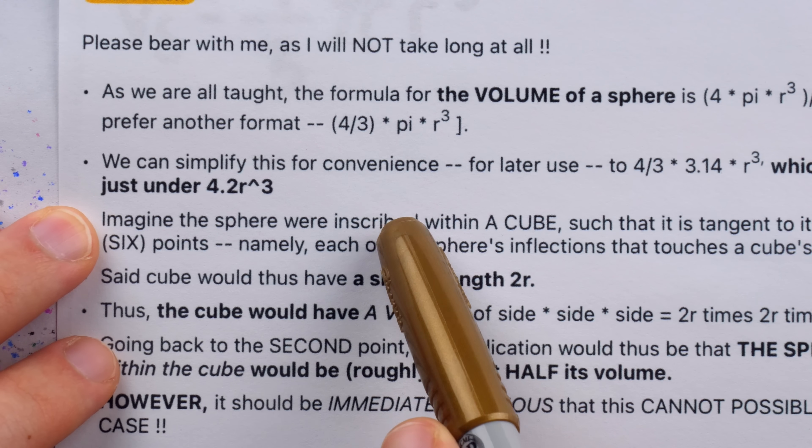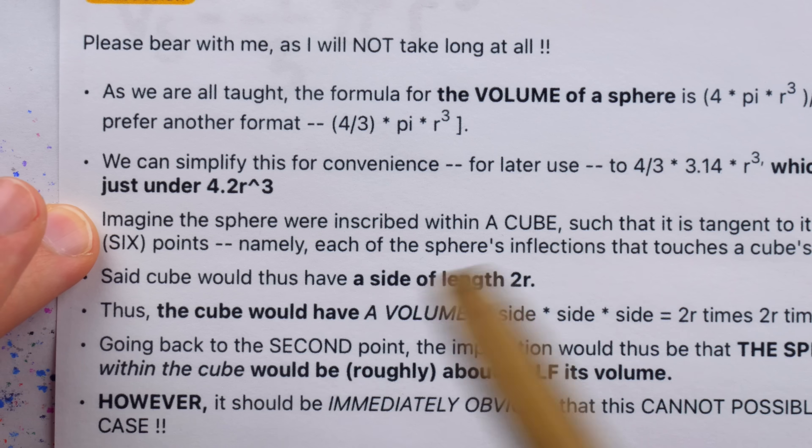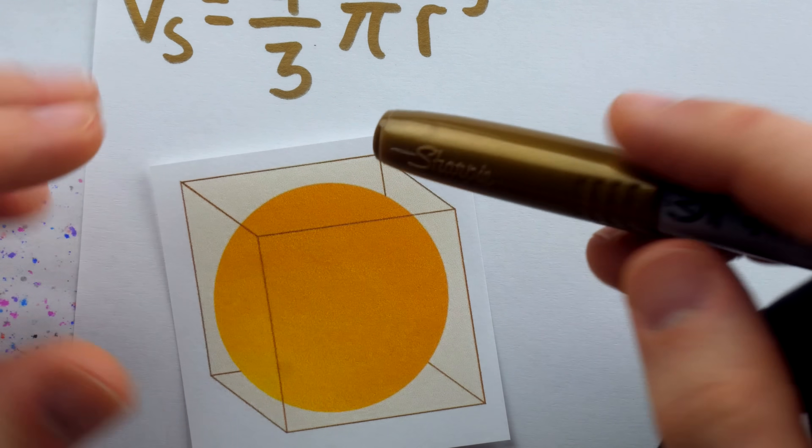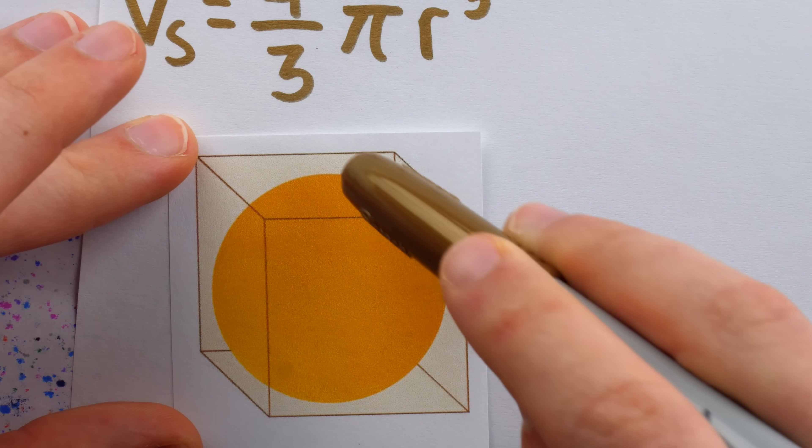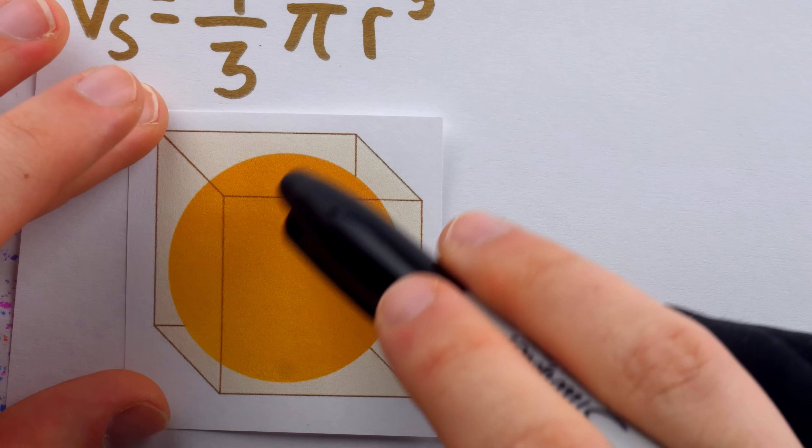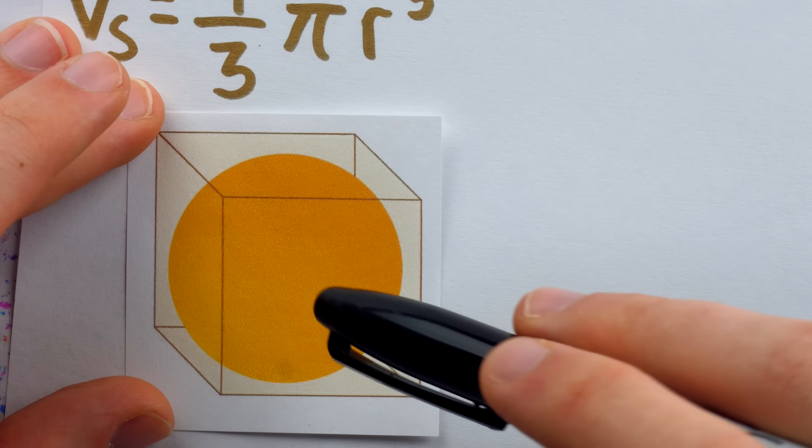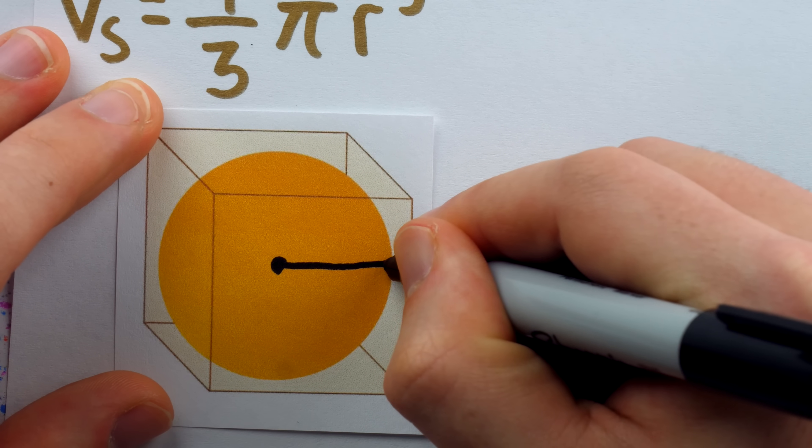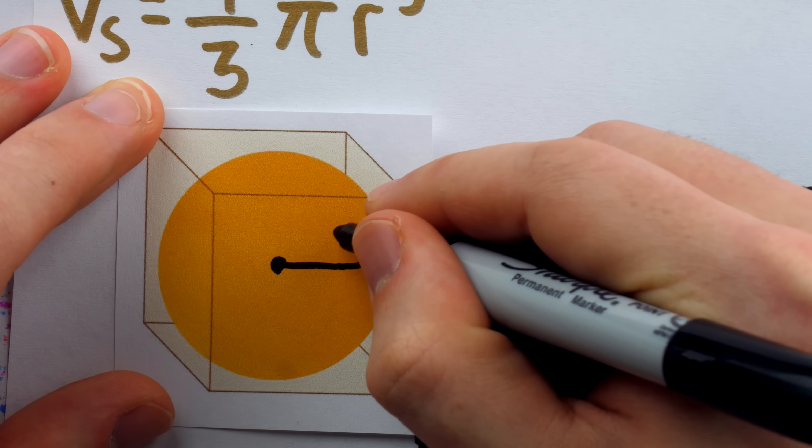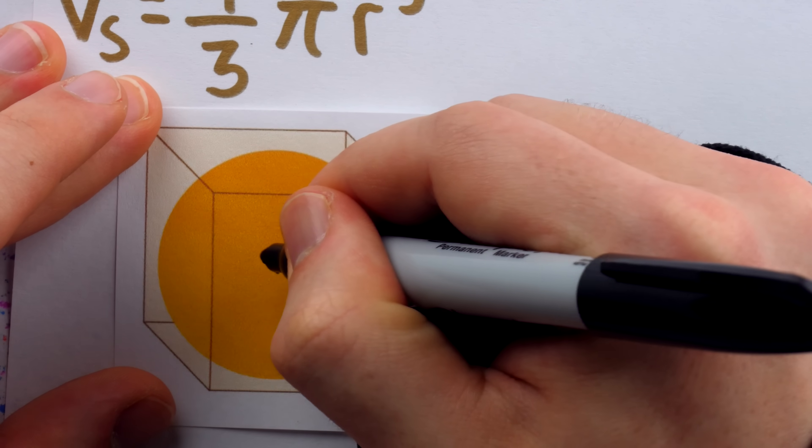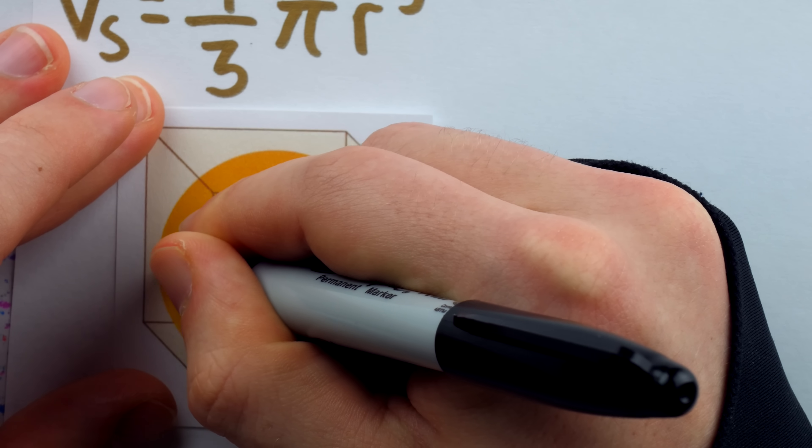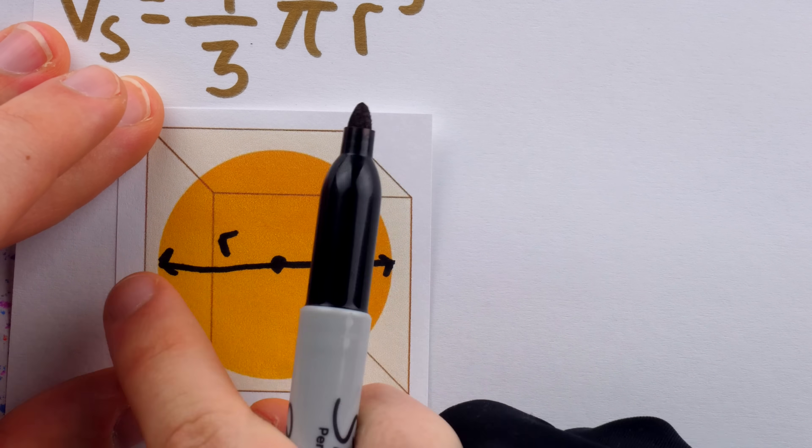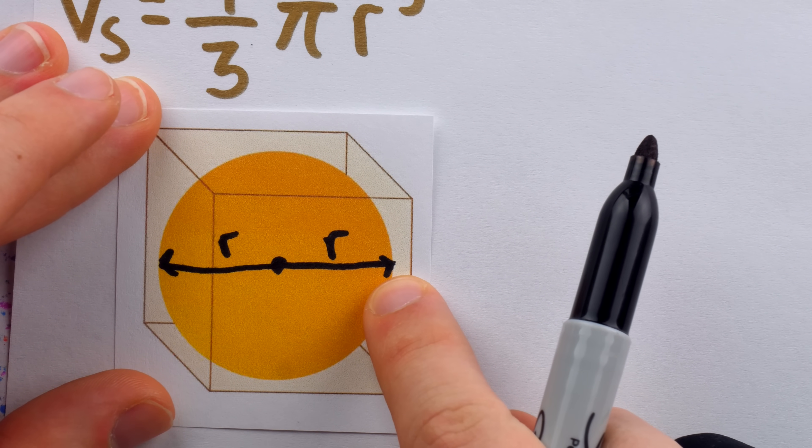Imagine the sphere were inscribed within a cube, such that it is tangent to it at exactly six points. We have this cube, and inscribed within the cube, just touching all six of its faces, is this sphere. Because of the geometrical arrangement here, we thus know the side length of the cube. By definition, the distance from the center of the sphere out to where it touches the cube's face is the radius r. We thus see that the side length of the cube is 2r.